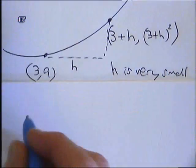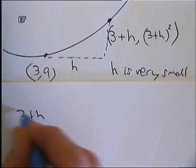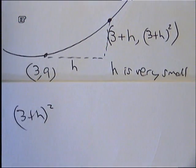We've got this y coordinate over here. It's 3 plus h all squared. What I want to do now is just to multiply that out, get rid of the brackets.